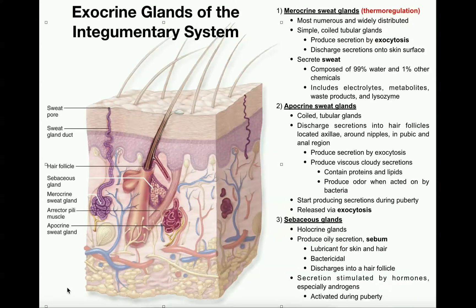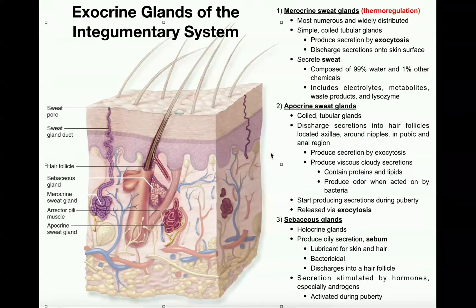There are two types of glands in the human body: endocrine glands and exocrine glands. Endocrine glands release hormones into the bloodstream, and we won't generally discuss those until Anatomy & Physiology II. Exocrine glands, on the other hand, release or discharge their secretions onto a body surface — they do not discharge their secretions into the blood.